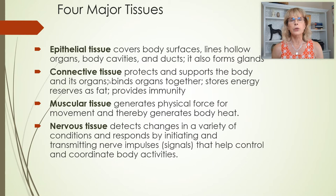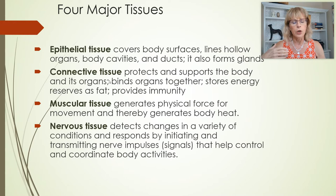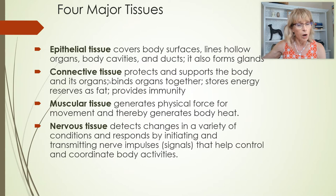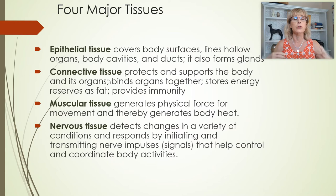Tissues are groups of cells that have similar properties and work together for a similar purpose. When we talk about tissues, we're talking about the different building materials used to create the structure that is the human body. Just like building a house requires bricks, cinder blocks, drywall, glass, and stucco, the different tissues allow us to build the human body.